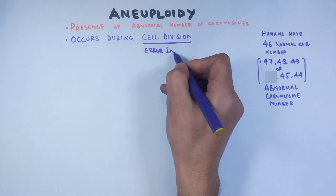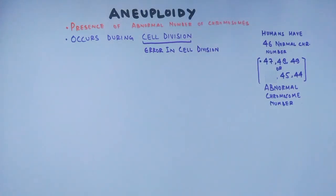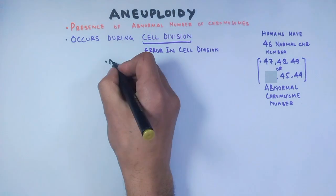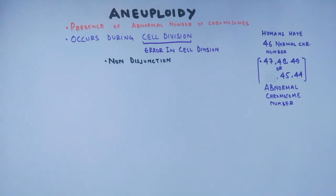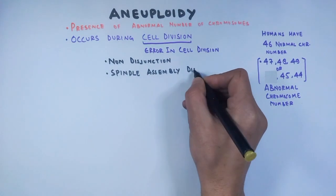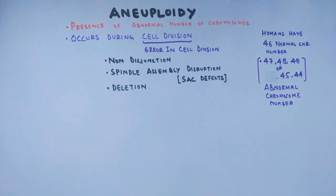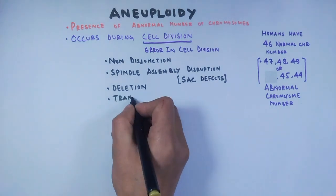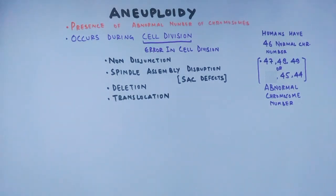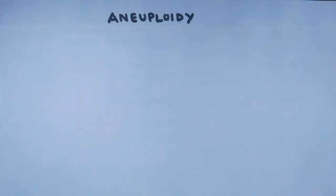Aneuploidy occurs when there is an error in cell division, causing some cells to get more chromosomes and some to get less than normal. The main errors contributing to aneuploidy include non-disjunction, where homologous chromosomes fail to separate; spindle assembly disruption, where there is a defect in the spindle assembly checkpoint; deletion, where part of a chromosome is deleted; and translocation, where part of a chromosome is translocated between different chromosomes.